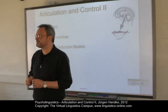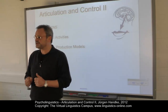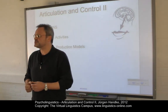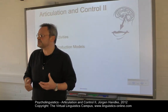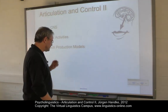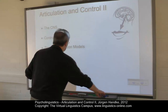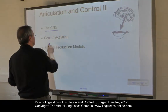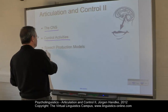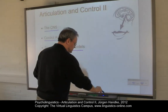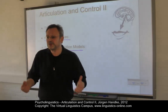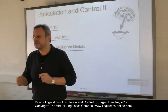Having discussed the principles of articulation in the clip Articulation and Control 1, let us now focus on how the central nervous system controls these activities. This is our program. We will first look at the central nervous system and its control activities, and will finally introduce models of speech production, including evidence against and in favor.